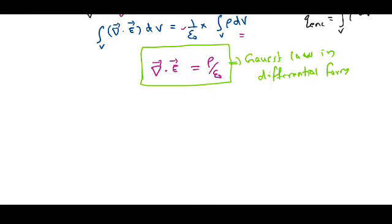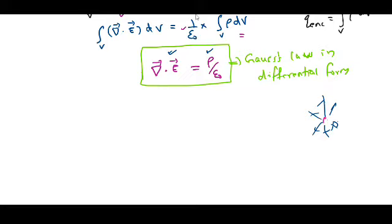This is the differential form of Gauss's theorem — equivalently, the divergence of E — Gauss's law in differential form. The physical meaning is: the source of the electric field is the charge density. If somewhere electric field lines are diverging outward, the source of that electric field is the charge density present there.